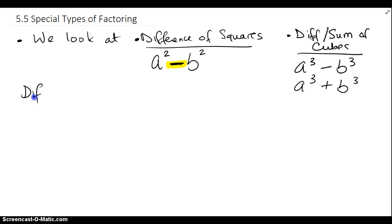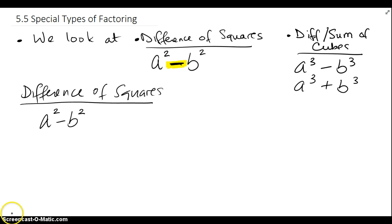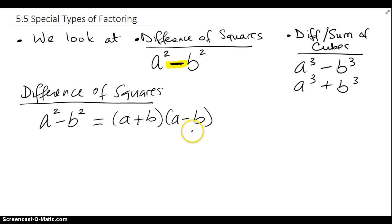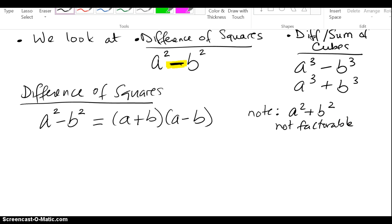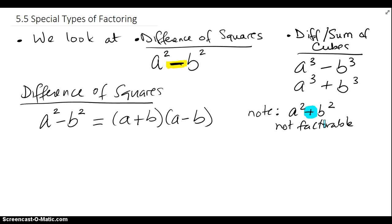First, we're going to look at the difference of squares. a squared minus b squared will factor into a plus b and a minus b. These can be really quick factoring problems. If you multiply this out, the middle terms will cancel, and you'll only end up with a squared minus b squared. Note that a squared plus b squared is actually not factorable — it will be a prime polynomial. So remember, the ones we focus on always have a minus in the middle.